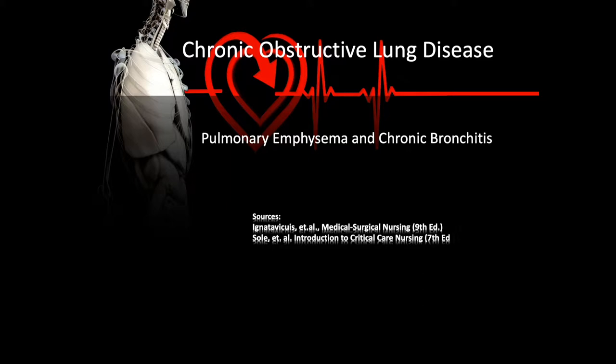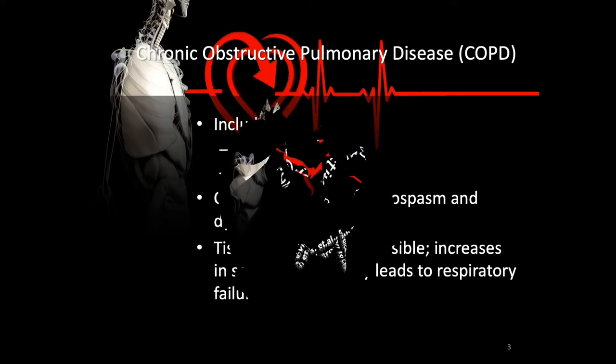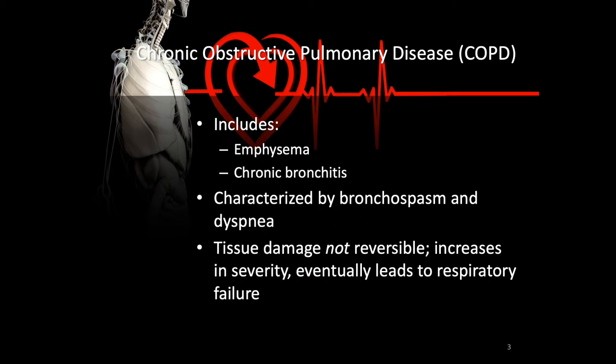Chronic obstructive lung diseases are primarily pulmonary emphysema and chronic bronchitis. Pulmonary emphysema mostly impacts the alveoli, while chronic bronchitis mostly impacts the airways. Both are characterized by bronchospasm and dyspnea. There is tissue damage that is not reversible, and it increases in severity, eventually leading to respiratory failure and death.